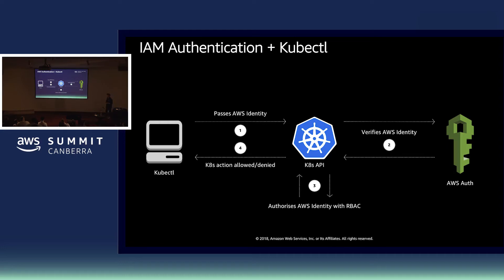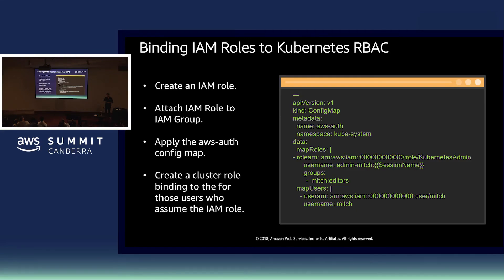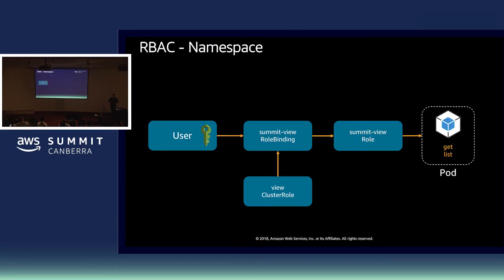These are rules defined within the Kubernetes cluster that govern what you can actually do within the cluster. One of the really cool things we can do through the IAM Authenticator is bind IAM roles to Kubernetes roles. So I can allow a member of a group with an IAM role associated to it to only perform a given set of actions within my Kubernetes cluster — for example, only being able to read or list pods. And that capability isn't limited to EKS; you can use the IAM Authenticator with any other Kubernetes deployment running on top of AWS.